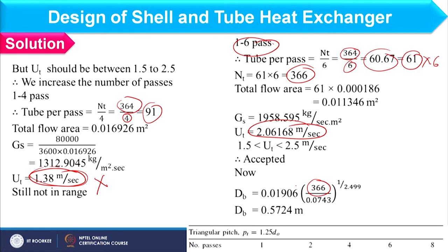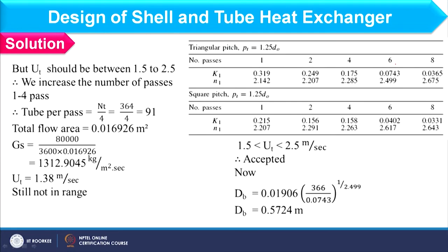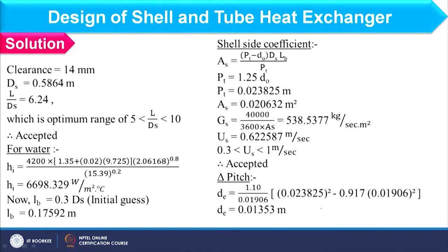Since the passes have changed, bundle diameter and shell diameter will also change slightly, along with the number of tubes. We must again ensure L/D falls within the permissible range. Considering 366 tubes and 6 passes, K1 and N1 values are obtained from the table. Bundle diameter comes as 0.57 m. Clearance from the same graph comes as 14 mm. The L/D ratio is 6.25, which is within the range.